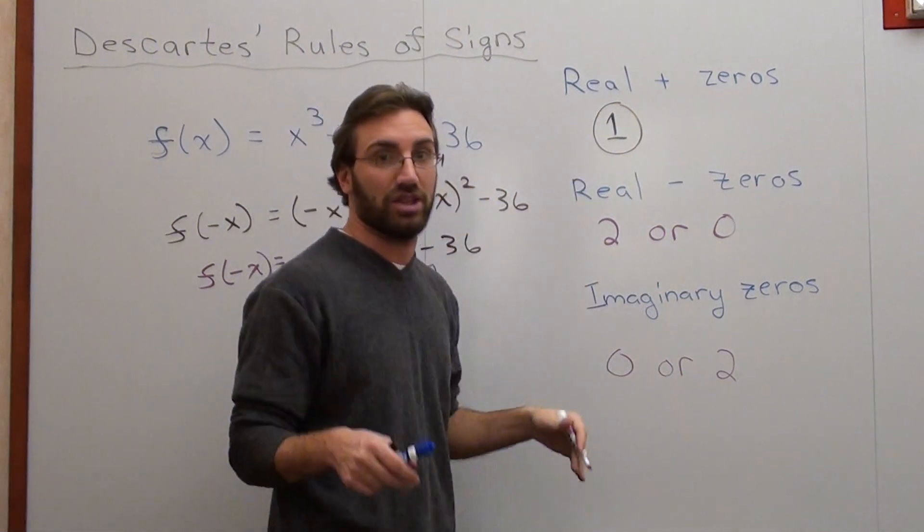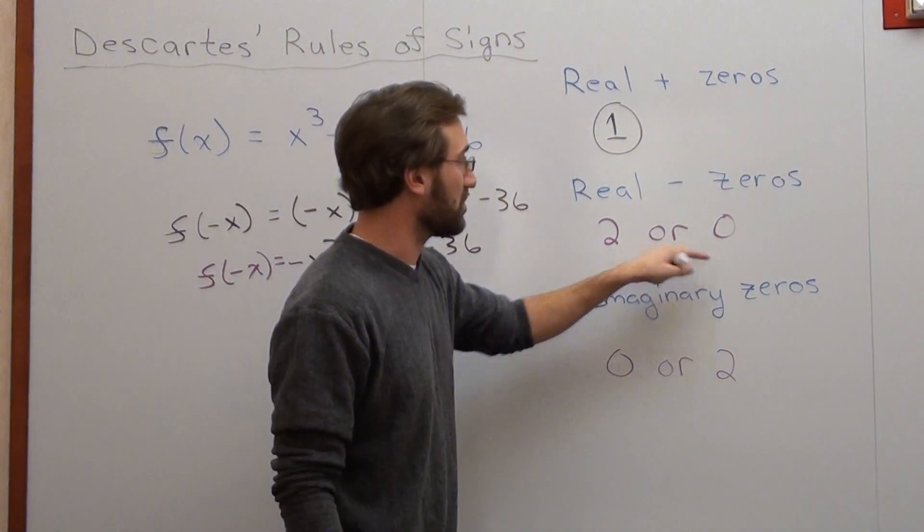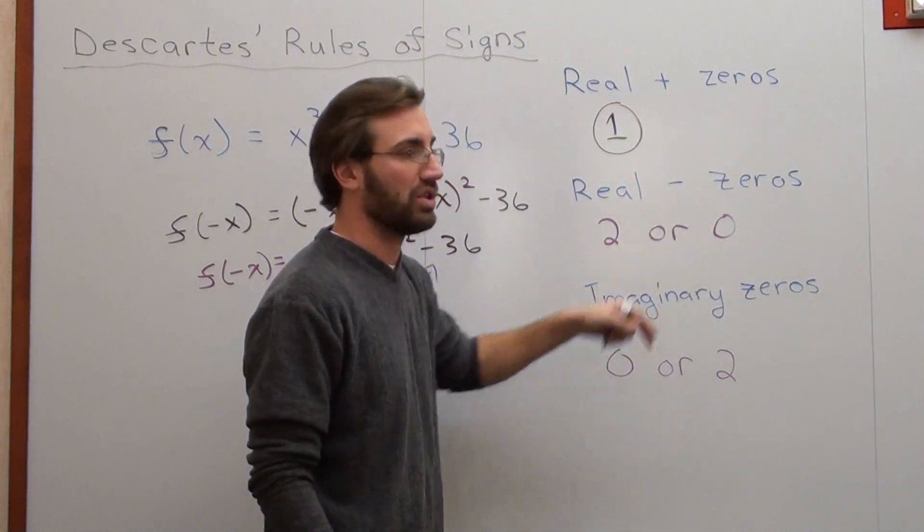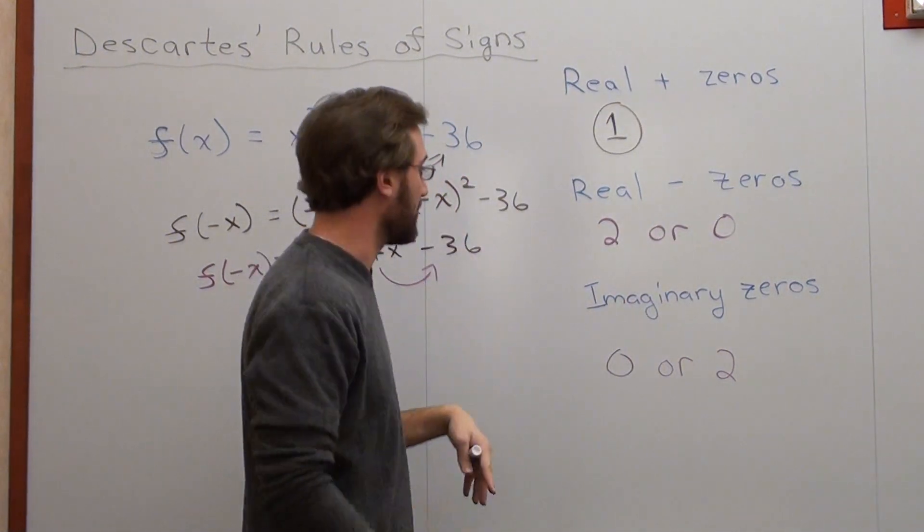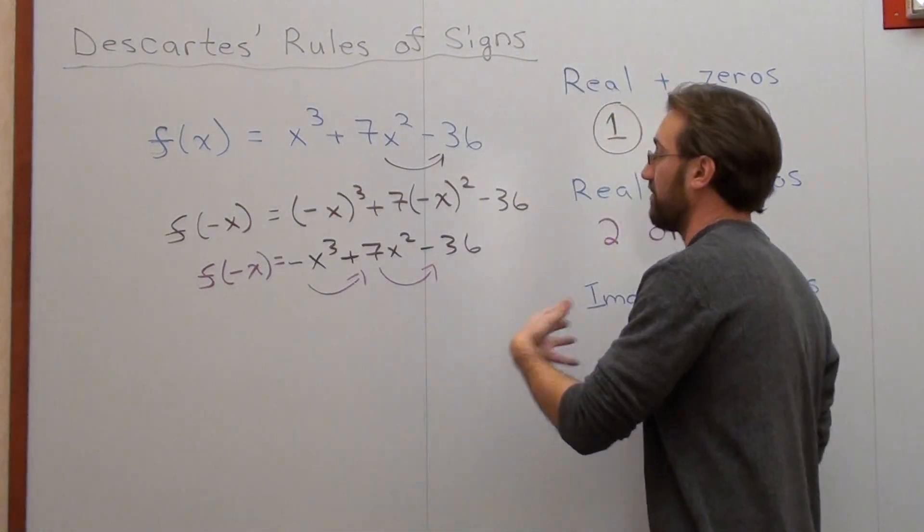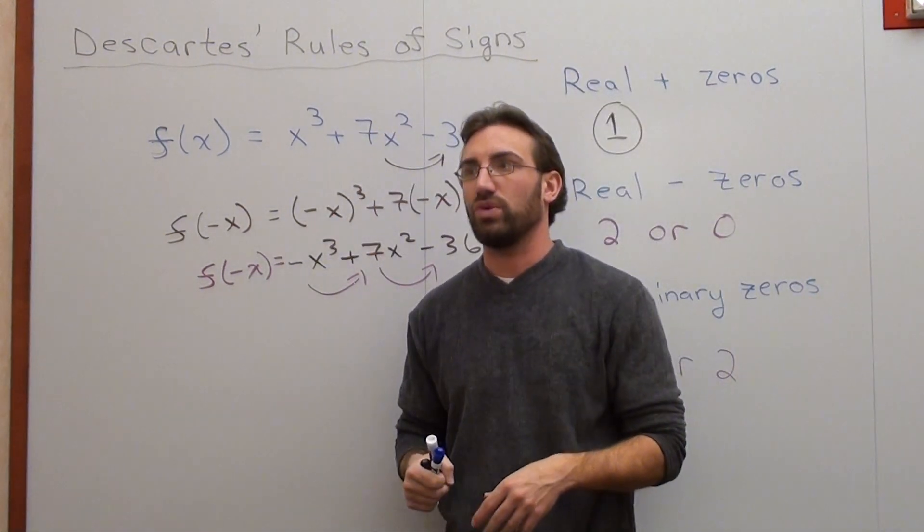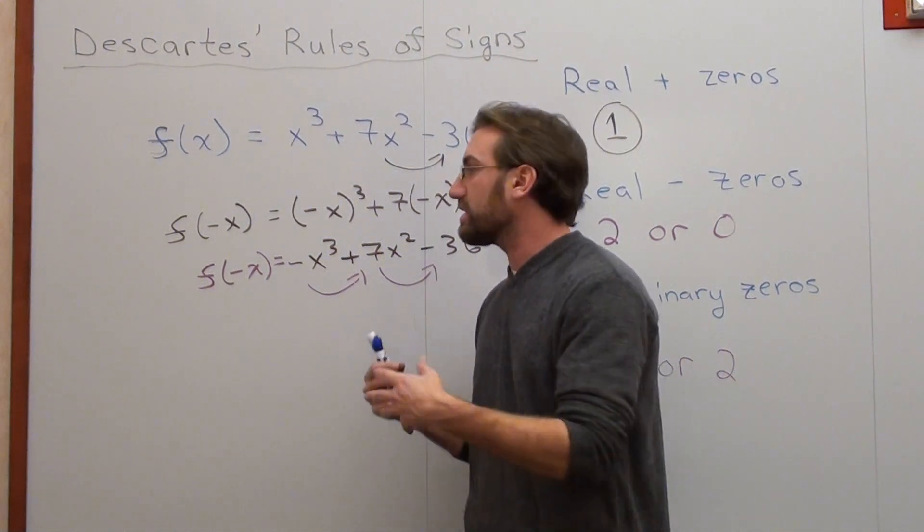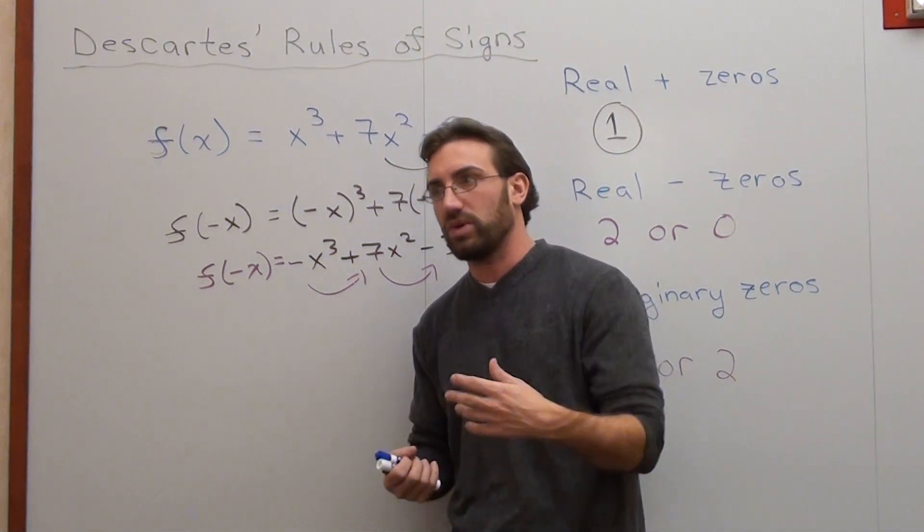You have one real positive zero. That's a given. You have two or zero real negative zeros on the negative side of the x-axis, and zero or two imaginary zeros. We use this information with the zero factor theorem, and it's not a bad way to do it.